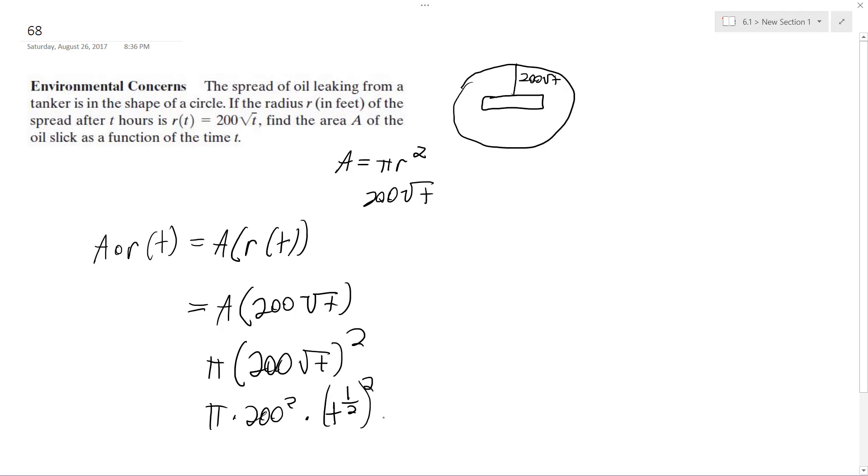So this simply becomes equal to 200 squared, 40,000, and then pi and then t raised to one half squared is equal to t.